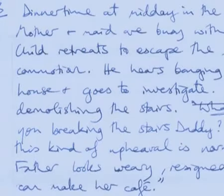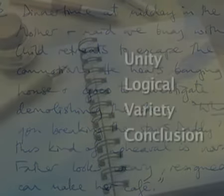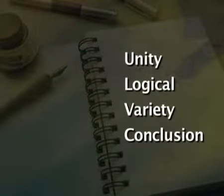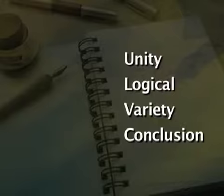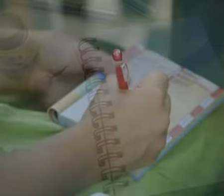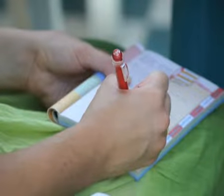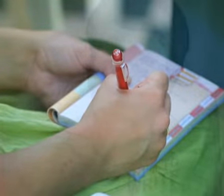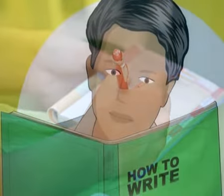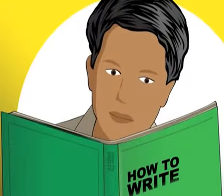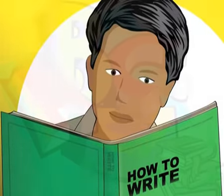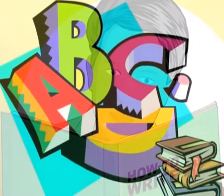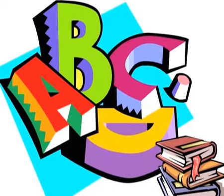Facts and details are given one after the other, leading to a summing up in the last sentence. A paragraph should have unity, a logical progression of thought, variety and a conclusion. We are sure to obtain 100 percent accuracy if we approach the topic in a scientific manner — that is in a methodical and systematic way — putting our skills of observation and thought and our knowledge of language to the best use.